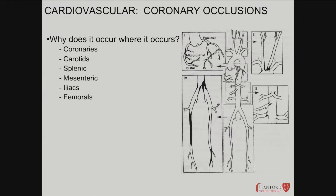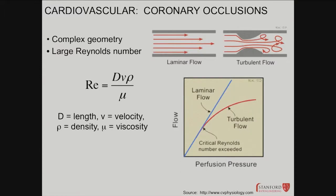The main arteries that get blocked are usually coronary arteries in the heart and carotids in the neck — carotids don't get fully blocked but get plaque buildup since they're fairly large. Other vessels include splenic, mesenteric, iliacs, and femoral. We talked about turbulent flow with plaque buildup and Reynolds number from physics.